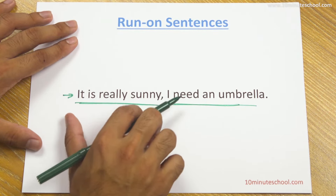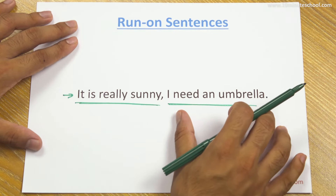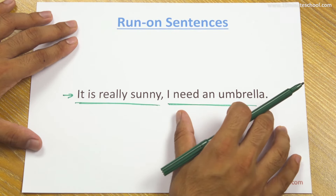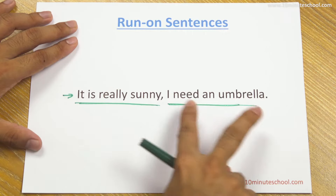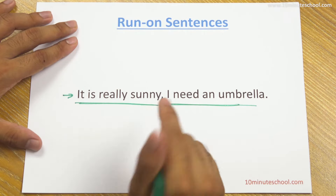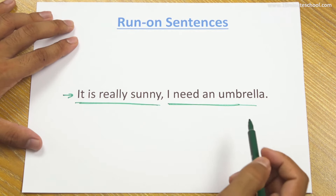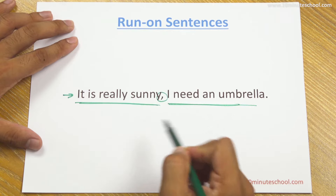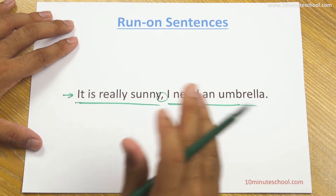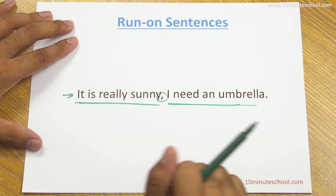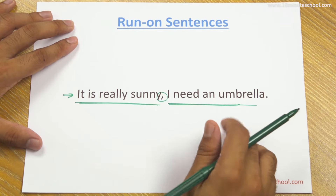This part is a dependent part. So this part is also a dependent part. We have to address run-on sentences — we need to fix when two parts are joined incorrectly.